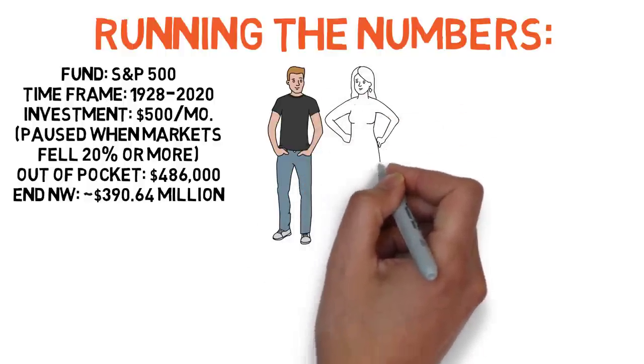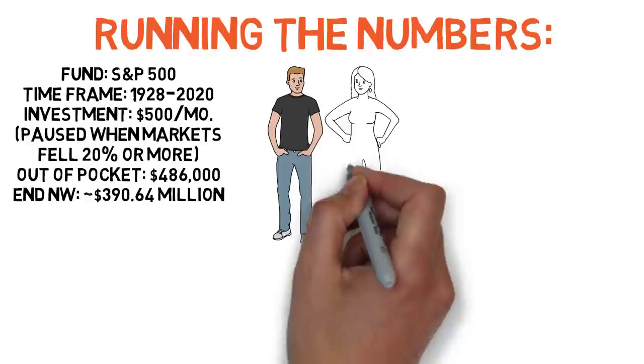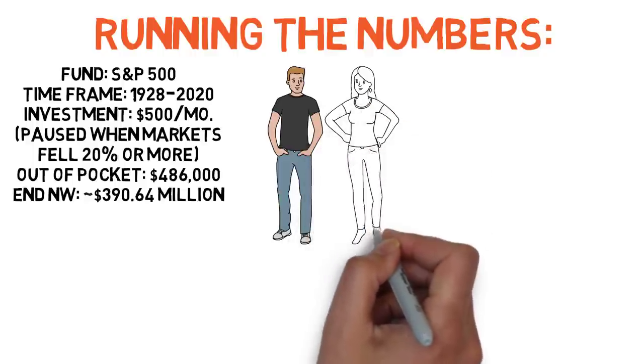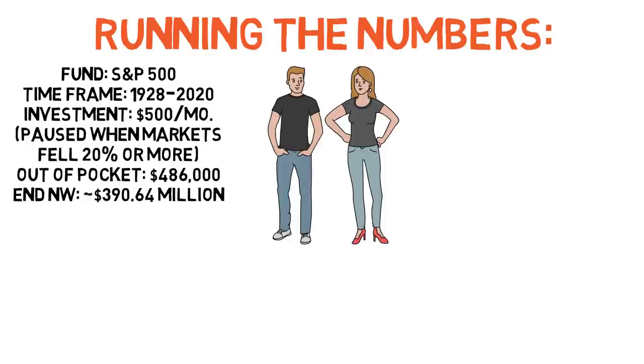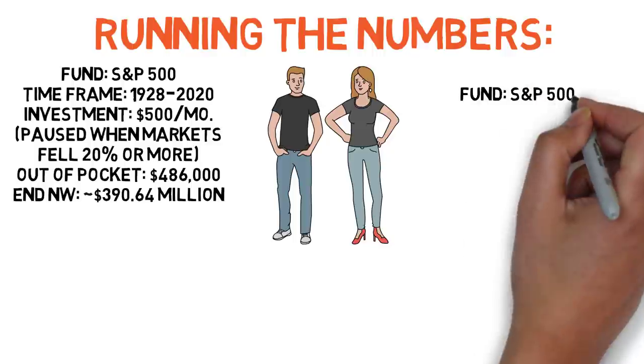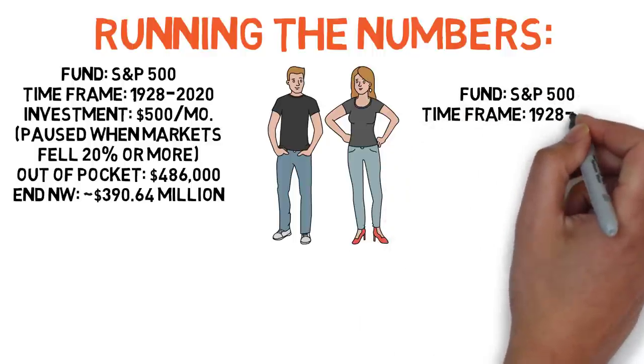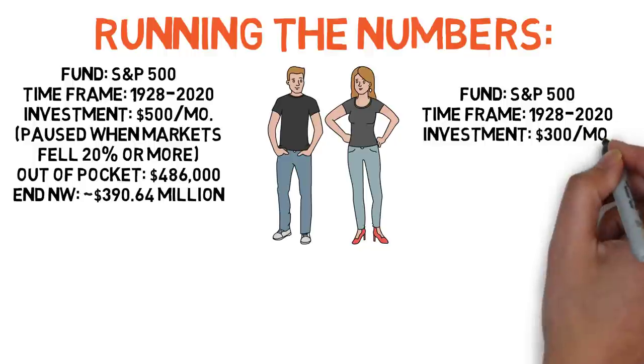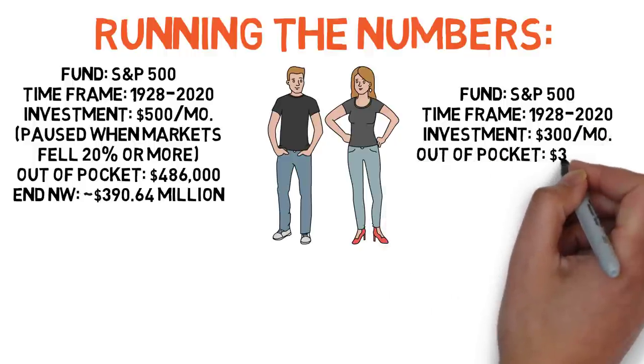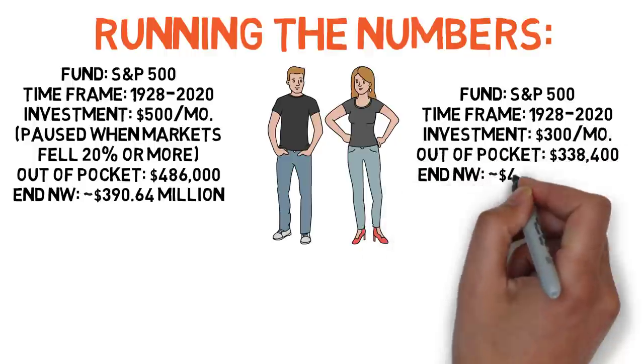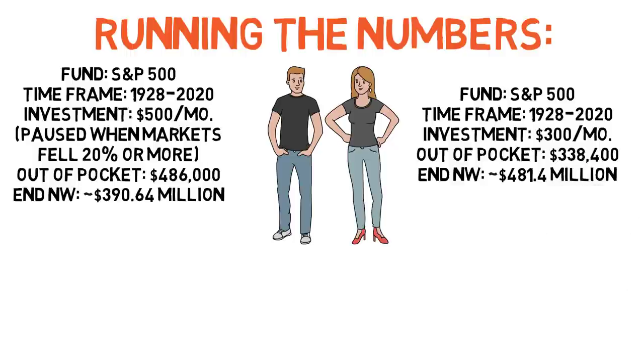Now, let's look at Jane, who invests less money each month than John, but due to having that cash buffer, she's never worried about moving backwards financially. Therefore, she feels comfortable investing consistently regardless of whatever the markets are doing. We'll say that she's putting away $300 a month. What do you suppose her ending net worth will be by the end of 2020? The answer is $481.4 million, with $338,400 of that being money that Jane invested out of her own pocket.